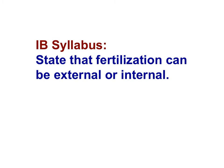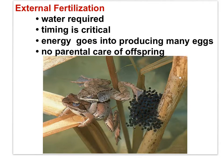The first IB syllabus statement is to state that fertilization can be external or internal. Before getting started looking at the reproductive processes in mammals — humans specifically — it's important to contrast the internal fertilization process of mammals with the external fertilization process found in so many other species.